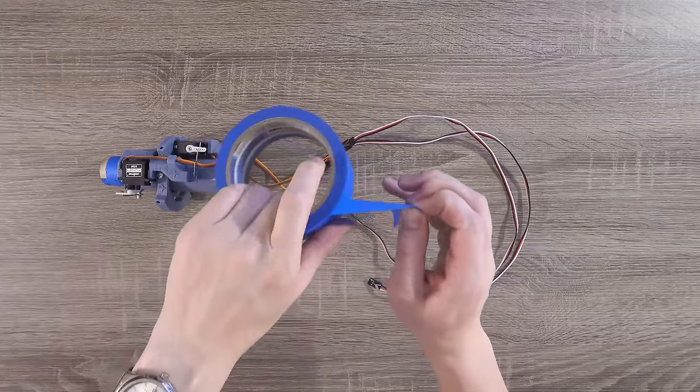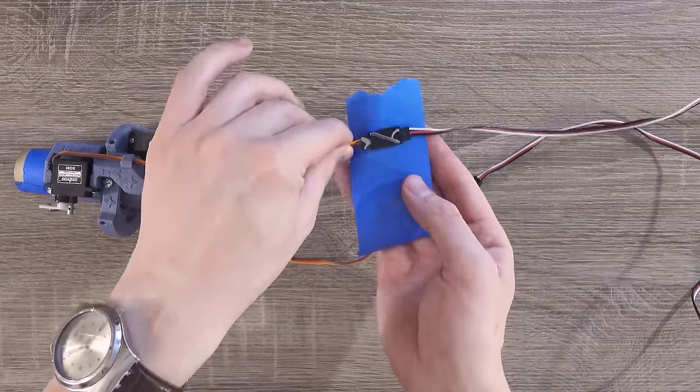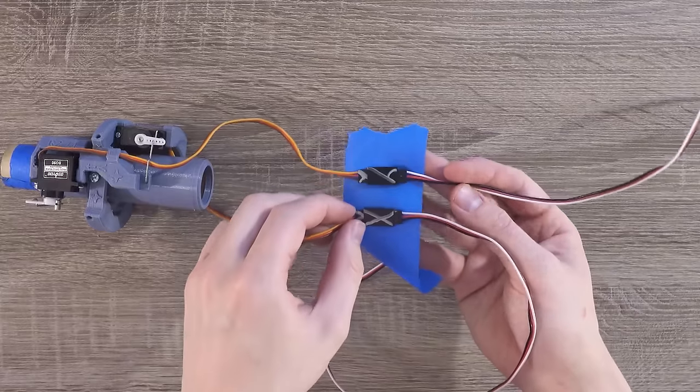To finish this up, grab a few centimeters of masking tape. We need to wrap up the joints between the two cables. The goal is to make sure they don't come undone.